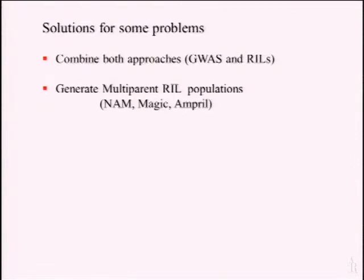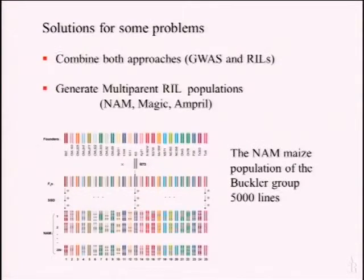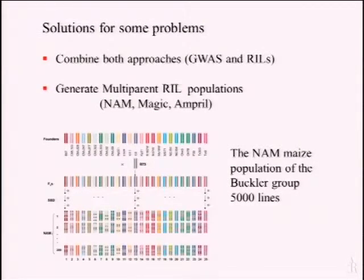Another way is to have mapping populations that include more parents. A very impressive population is the so-called NAM population in maize, generated by Ed Buckler. He took 25 very diverse genotypes of maize, crossed them to reference inbred line B73, and generated from each hybrid a mapping population of around 200 recombinant inbred plants. Altogether you get a large number of lines, which increases your accuracy of mapping enormously and you exploit really the variation. This is an extremely important population in maize.